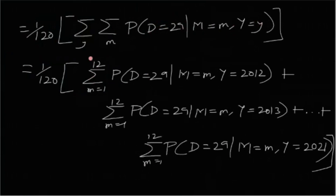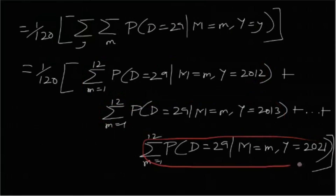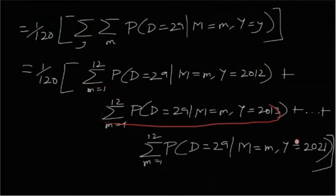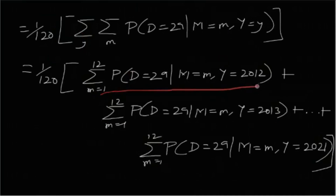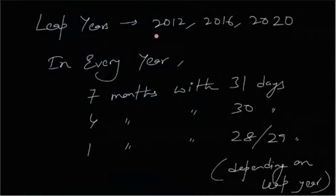The remaining part is the double sum over Y and M of P(D=29 | M=m, Y=y). I've broken this down: each fixed value of Y gives a sum over the 12 months. So for Y=2012 we have one sum of 12 terms, for Y=2013 another, and so on up to Y=2021 — 10 groups of 12 terms, giving 120 terms total. If you know how to evaluate one of these inner sums, you can do the others. The leap years are 2012, 2016, and 2020.